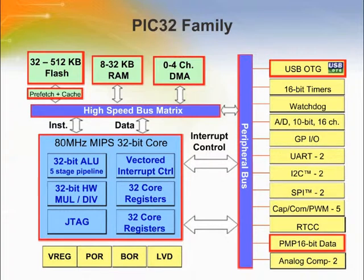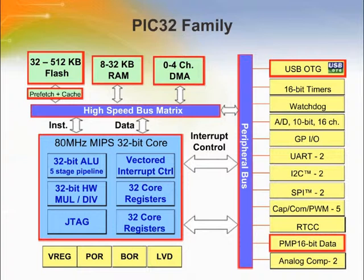The PIC32 has the MIPS M4K core running at 80 MIPS with a dual set of 32-bit registers. These two register sets can be swapped in a single cycle, enabling faster interrupt handling. The core also has a 32-bit hardware multiply and divide module, and a 32-bit five-stage pipeline ALU. A DMA handles peripherals. All common peripherals are available. USB OTG with a dedicated DMA is available to talk to a PDA, and interfacing with a QVGA graphics panel is accomplished using the 16-bit parallel master port.